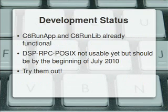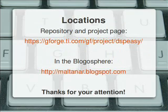Finally, taking a look at the status of development: C6RunApp and C6RunLib are already quite functional, although DSP RPC POSIX isn't usable just yet, but should be in one or two weeks — that is, by the beginning of July. You're quite welcome to visit the repository, get the sources, and try these things out yourself. You can also watch the progress of DSP RPC POSIX and read my related posts at maltanar.blogspot.com. Thank you very much for your time and attention, and I wish you all a very pleasant day.